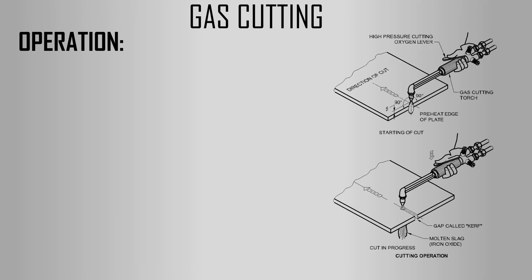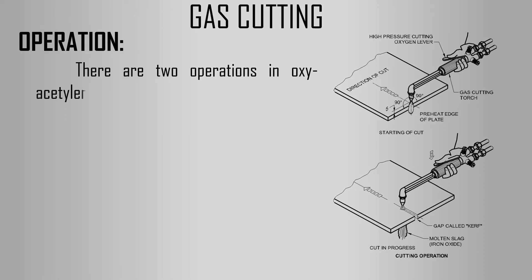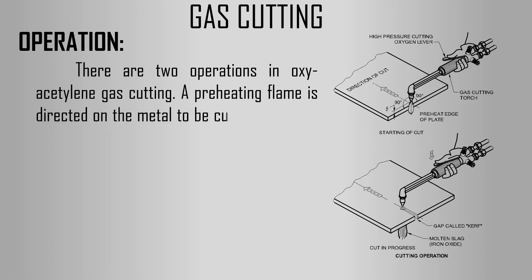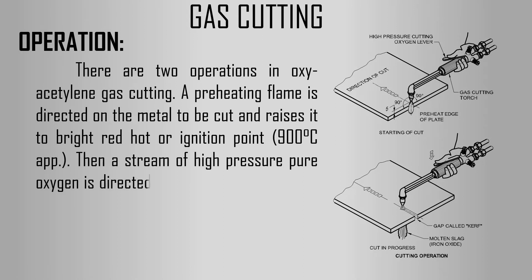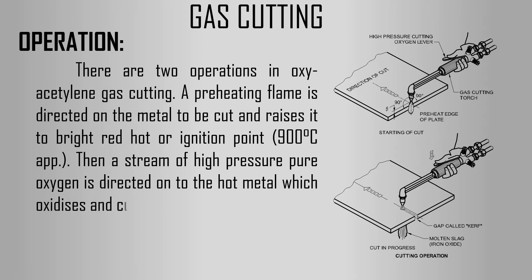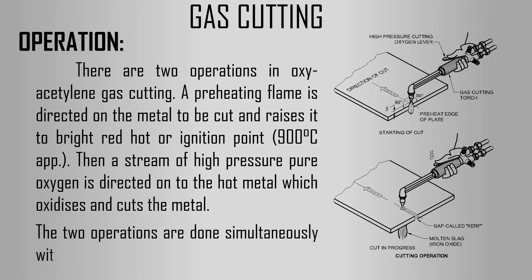Next, we are going to see the gas cutting operation. There are two operations in oxyacetylene gas cutting. A preheating flame is directed on the metal to be cut and heats it to bright red-hot or ignition point, 900 degrees Celsius approximately. Then a stream of high-pressure pure oxygen is directed onto the hot metal, which oxidizes and cuts the metal. The two operations are done simultaneously with a single torch.